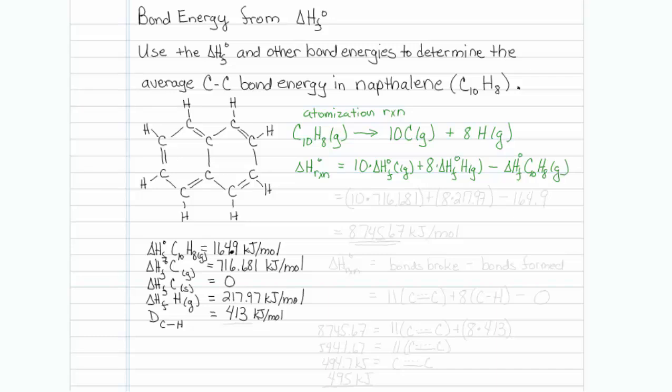So we have these values in the table. This would be equal to ten times the heat of formation of carbon in the gas phase is 716.681, plus eight, the heat of formation of hydrogen in the gas phase is 217.97, minus the heat of formation of the naphthalene, which is 164.9. All of these are in kilojoules per mole.